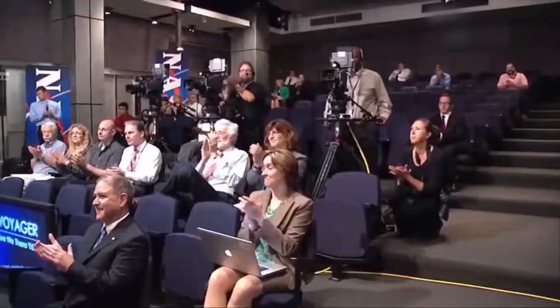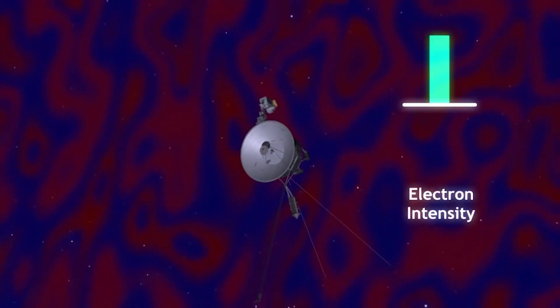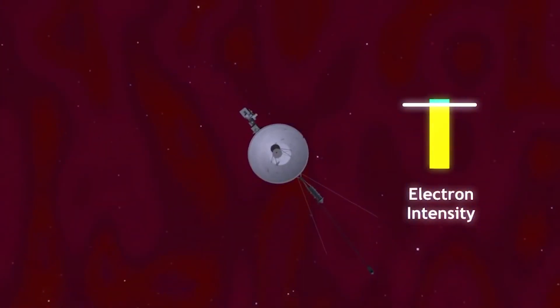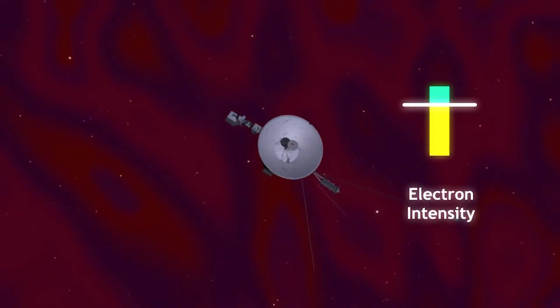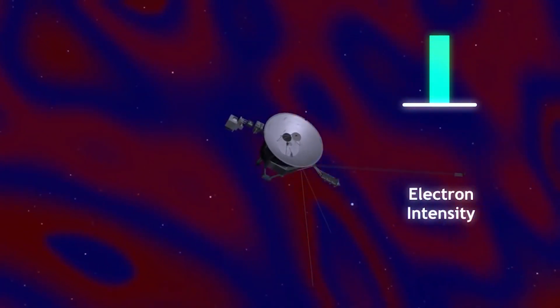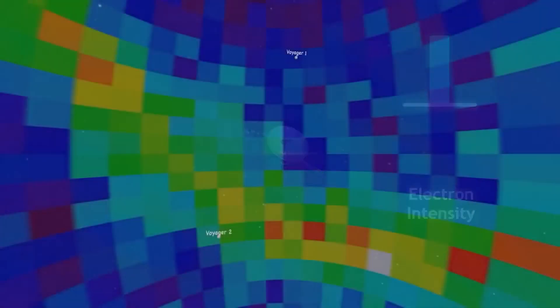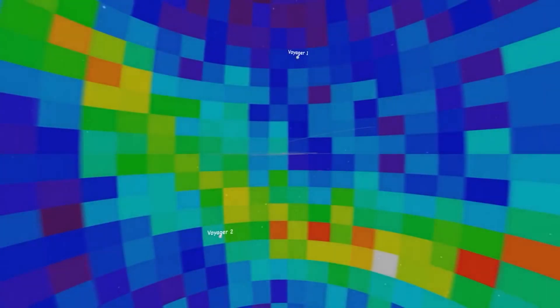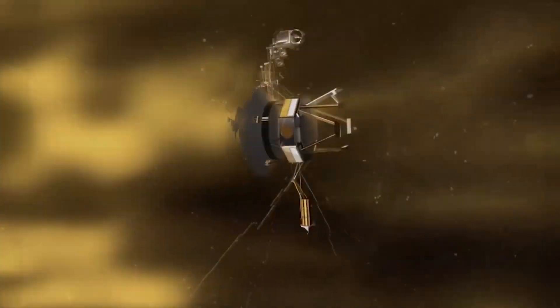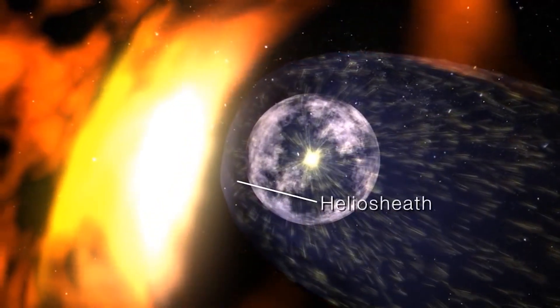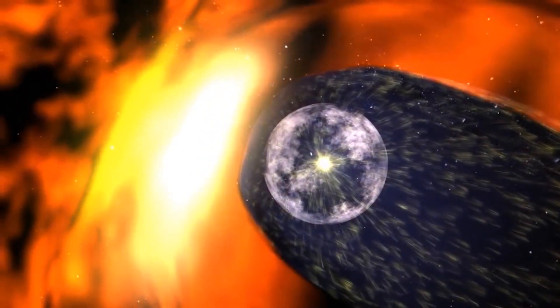This was a huge milestone for humanity, and we got to realize that the plasma circumferencing the craft slowed and increased in temperature and density, but the moment it got to the other side of the boundary, the interstellar medium got significantly hot. We're referring to temperatures as high as 30,000 degrees Celsius or 54,000 degrees Fahrenheit, which is way hotter than imagined.